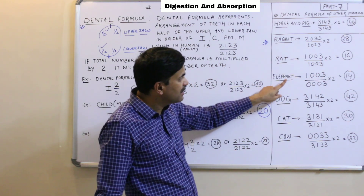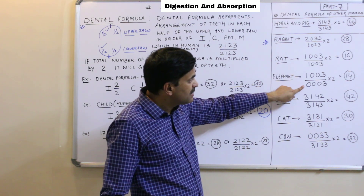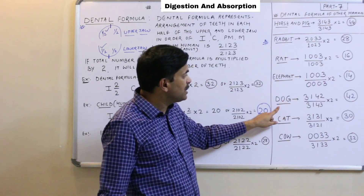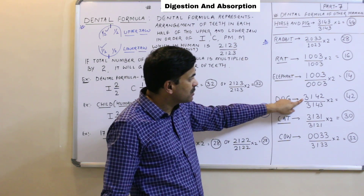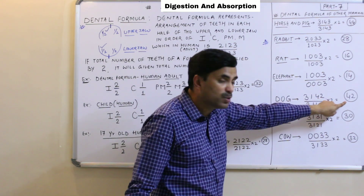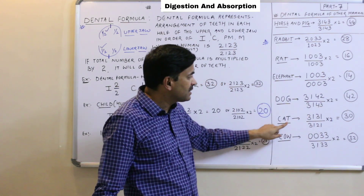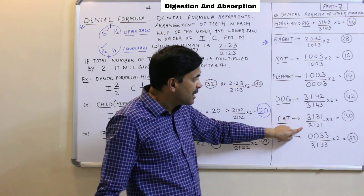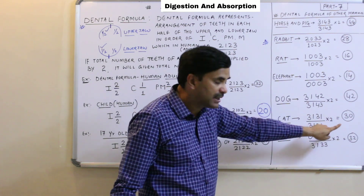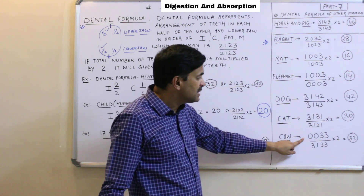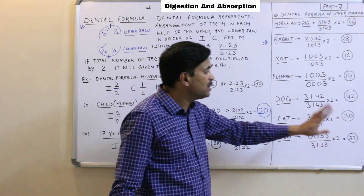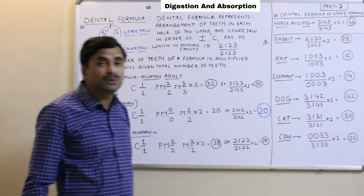In elephant, the dental formula is 1, 0, 0, 3 upon 0, 0, 0, 3 into 2 equals 14. In dog, 3, 1, 4, 2 upon 3, 1, 4, 3 into 2 equals 42. In cat, 3, 1, 3, 1 upon 3, 1, 2, 1 into 2 equals 30. And in cow, 0, 0, 0, 3 upon 3, 1, 3, 3 into 2 equals 32.